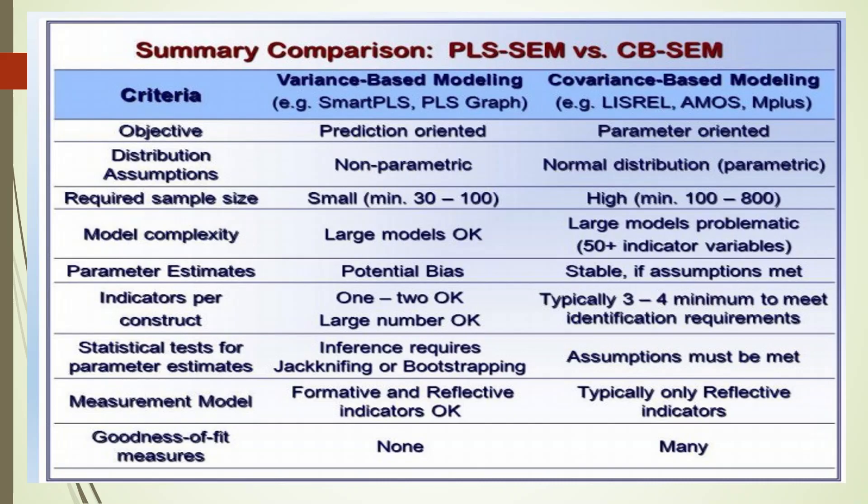Required sample size: in case of Smart PLS it can work on small sample size also. In case of covariance we require some large sample size. Model complexity: Smart PLS can very well handle large models. In case of covariance-based SEM, 50 plus indicator variables are problematic.